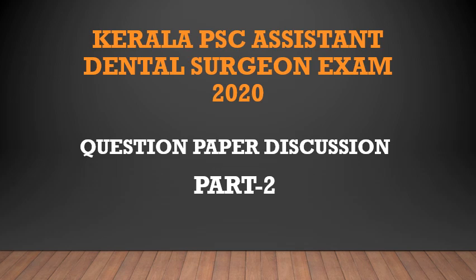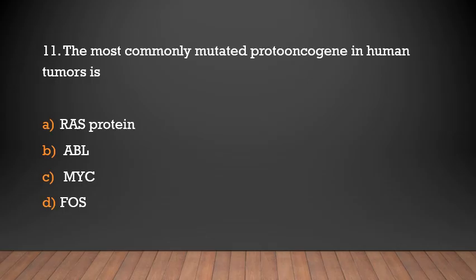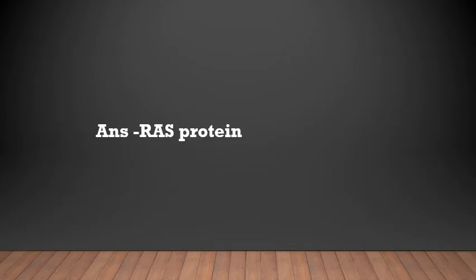Hello friends, welcome to A2C Dentistry. The most commonly mutated proto-oncogene in human tumors is: Ras protein, ABN, MYC, or FOS. The answer is Ras protein.